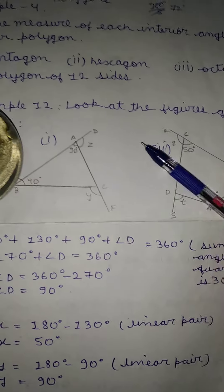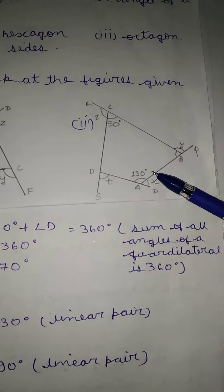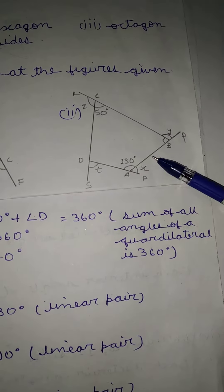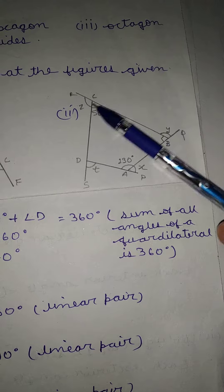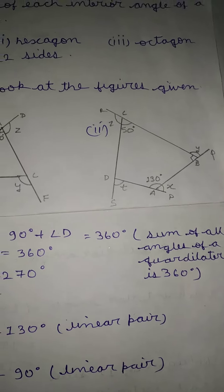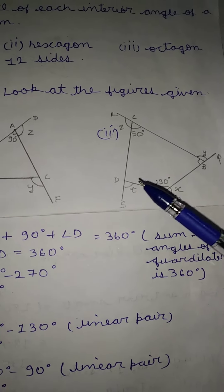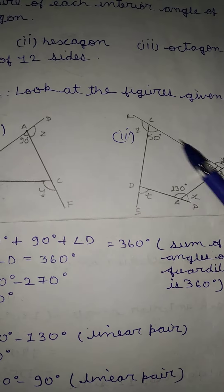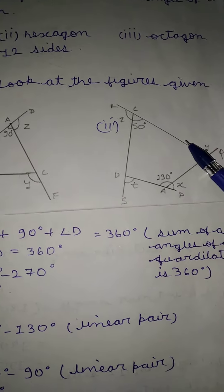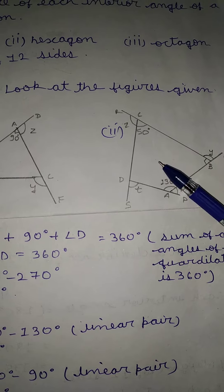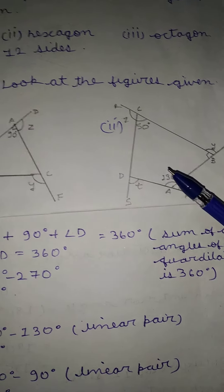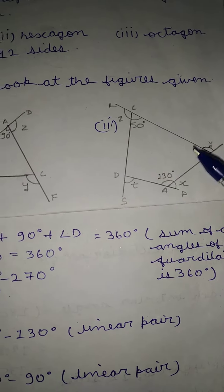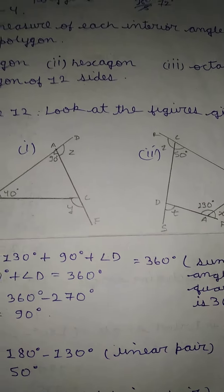Look at the figure. We have to find out the values of t, x, y, and z. This is a quadrilateral, so how can we find out the values of x, y, z, and t?